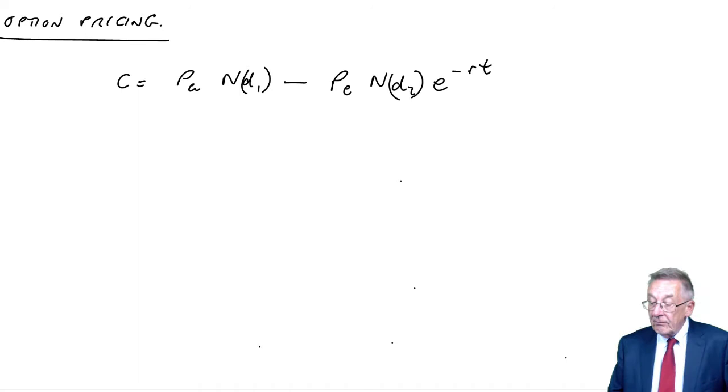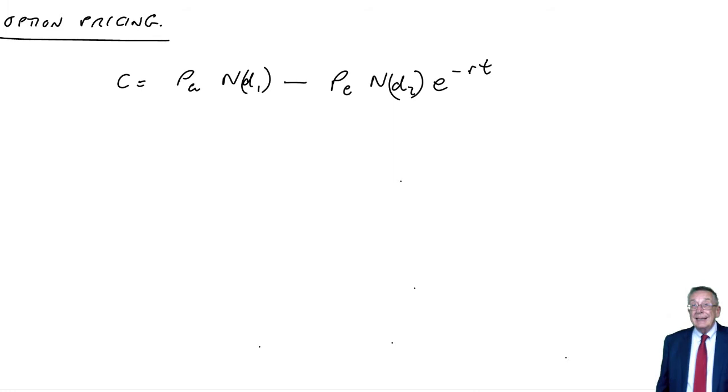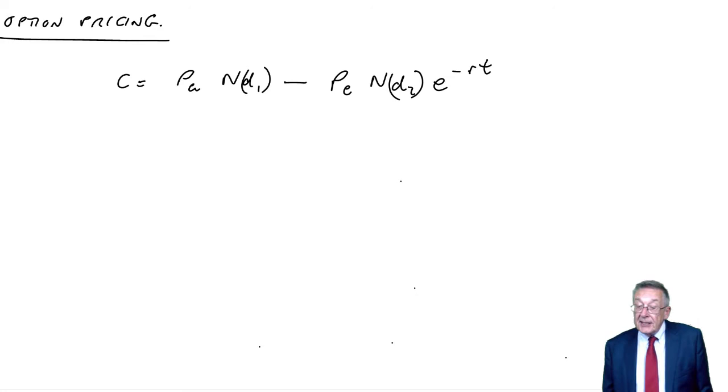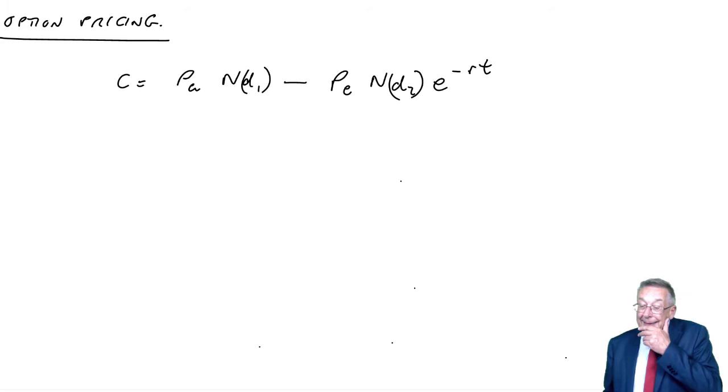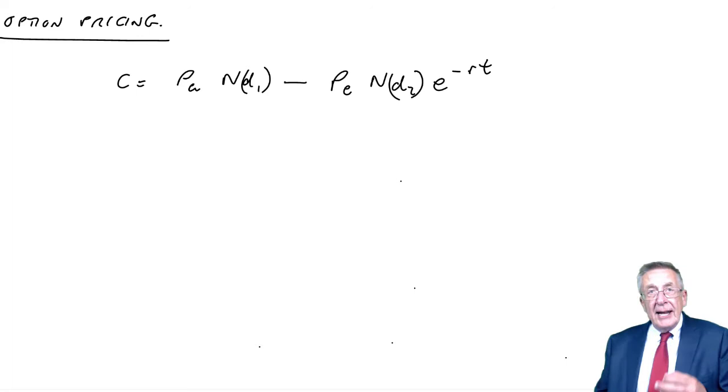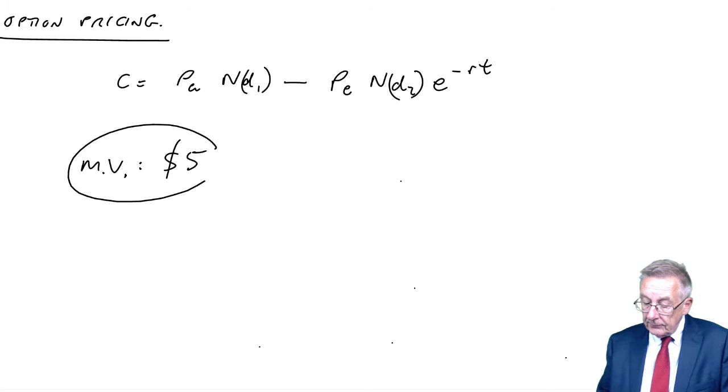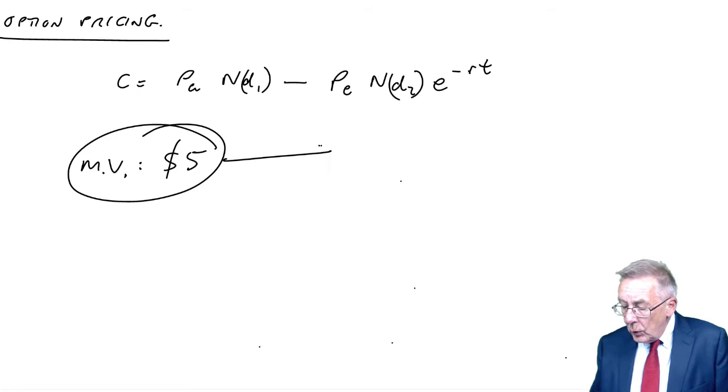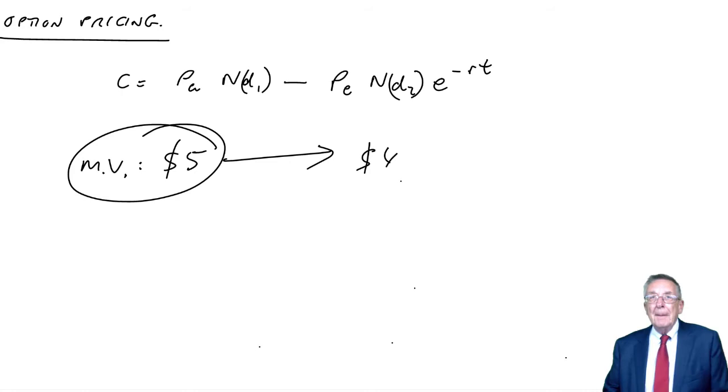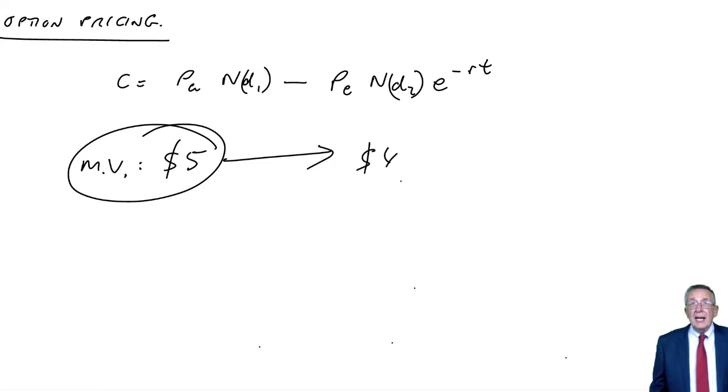However, financial managers shouldn't be gambling the company's money. Financial managers might use options for hedging. What I mean here is suppose we currently already own some shares, and the current value of them is $5. We're worried there's a risk the share price might fall to only $4 or something. We are going to sell them in the future - for some reason we can't sell them now. I'm going to sell them perhaps in three months' time, but I'm worried that the share price might fall.